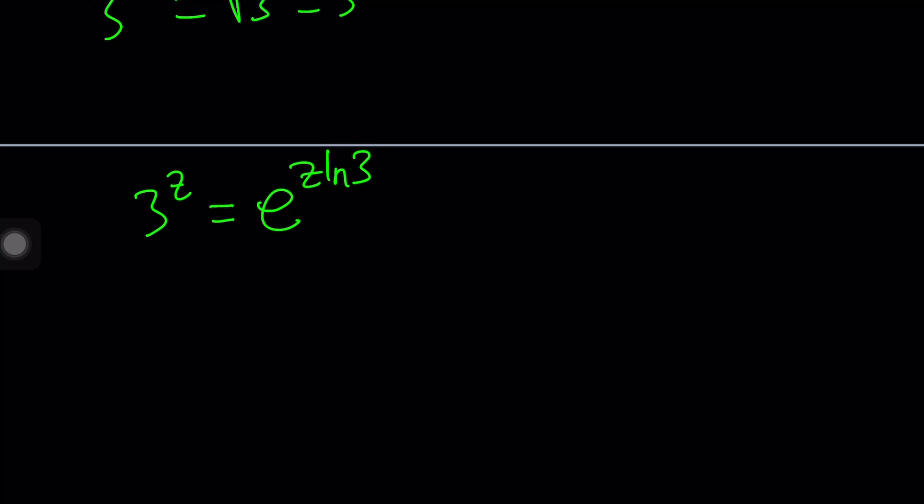If you replace 3 with something else like w, it's going to be e to the power z ln w. How do you find the log of a complex number? That's a good question. But in this case, we have the ln of a real number, so we should be good. So that's 3 to the power of z.